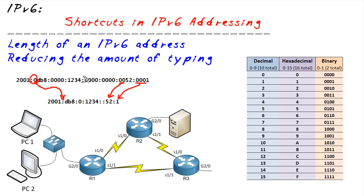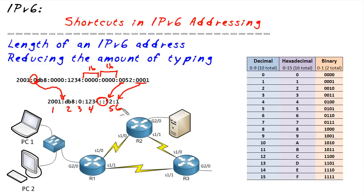Now, if we have two groupings — 16 bits and 16 more bits — that are all zeros, we can use a double-colon shortcut for a contiguous grouping of zeros. The system knows there should be eight groups, counts only six, and determines the double colon must represent two groups of zeros, or 32 bits worth of zeros.